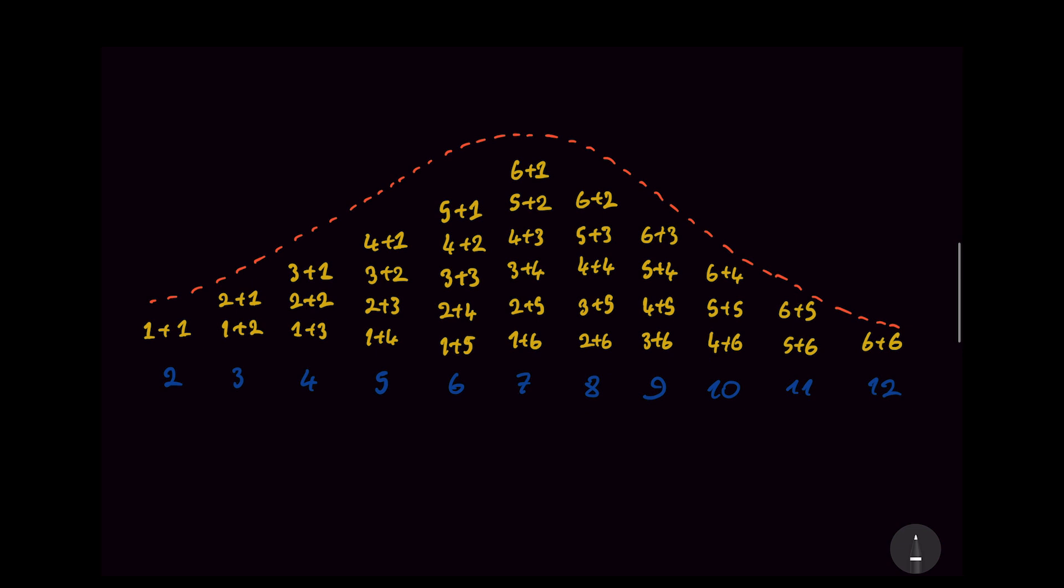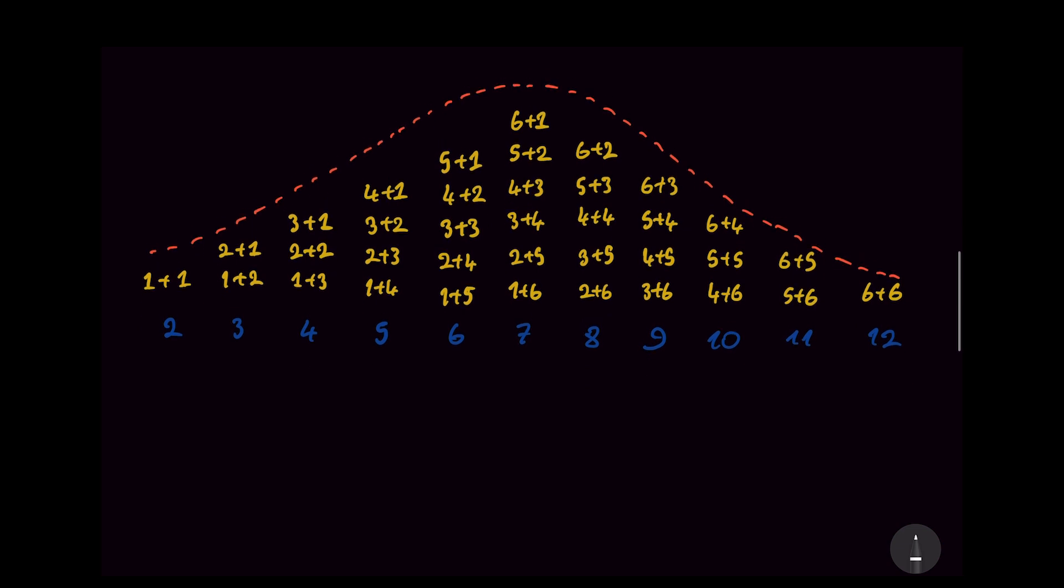That's important, because if we go ahead and map out all of the numbers that we can get from the two dice, you can see that it already looks like a Gaussian curve, a bell curve. So the least likely things that are to happen are on the extreme ends of the distribution.